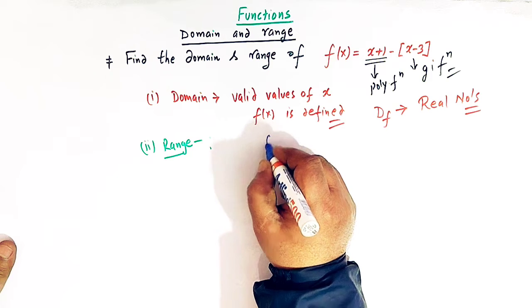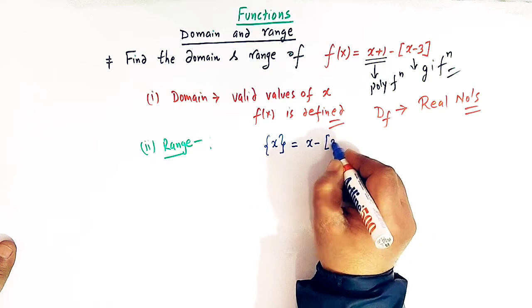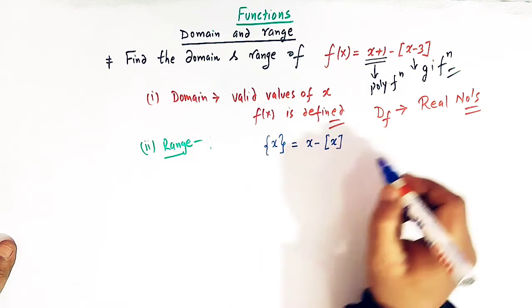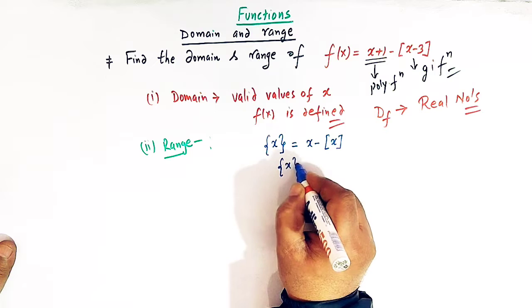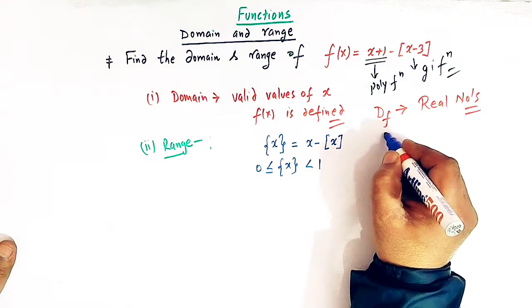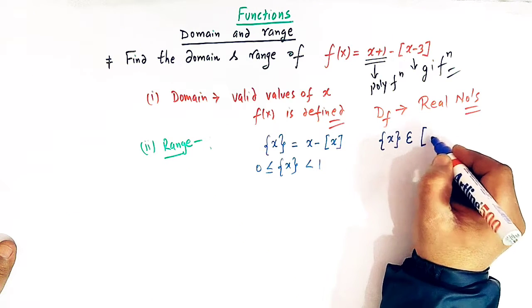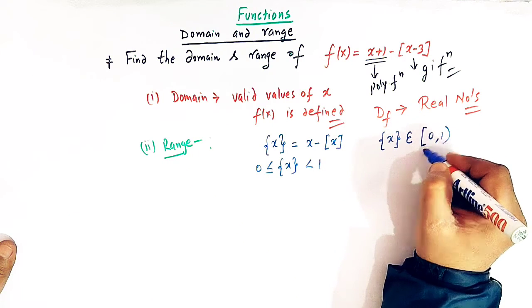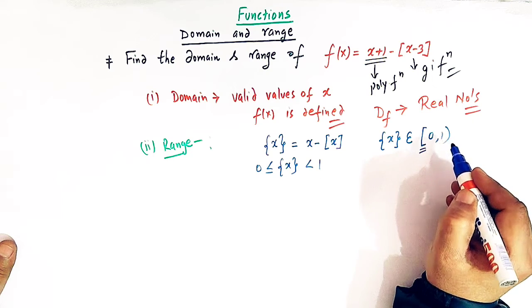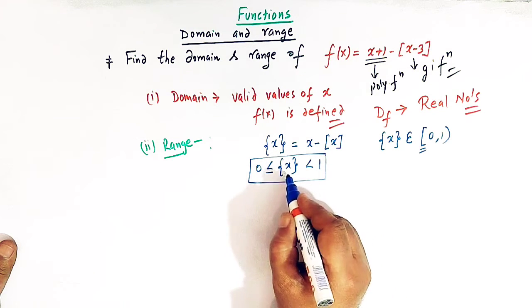We know that the fractional part of x is given by x minus the greatest integer of x. This is the definition of the fractional part of x. The range of the fractional part function lies between 0 and 1. In other words, the fractional part of x belongs to the interval [0, 1) — it is closed from the left and open from the right.